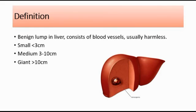Hemangiomas are commonly found at the peripheral location of the liver. For the size of hemangioma, if it is less than 3 cm, it is considered small in size, and large in size for those that are more than 10 cm.